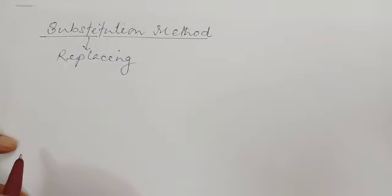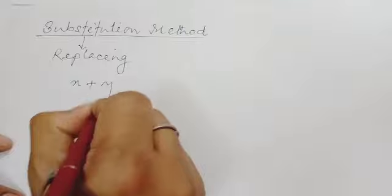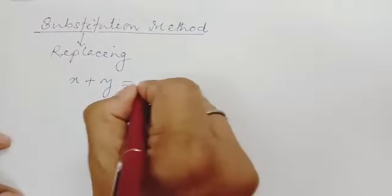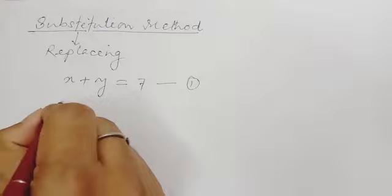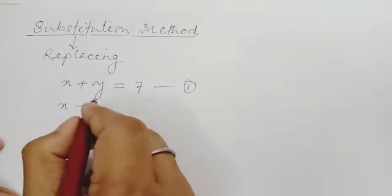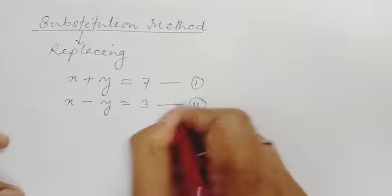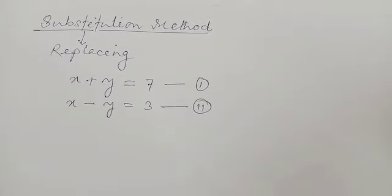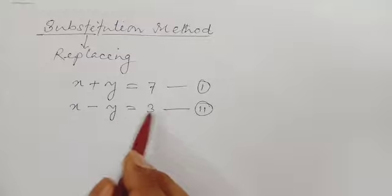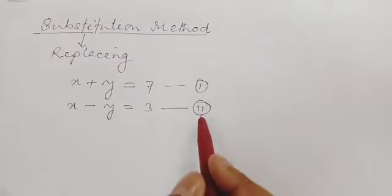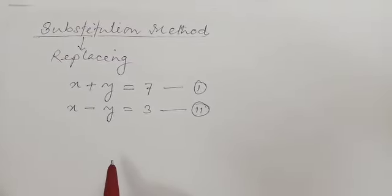Let's take an example. Suppose we have the first equation: x plus y equal to 7, and the second equation: x minus y equal to 3. As you can see, here we have two linear equations. Now from these two equations, take whichever one seems easier to you.